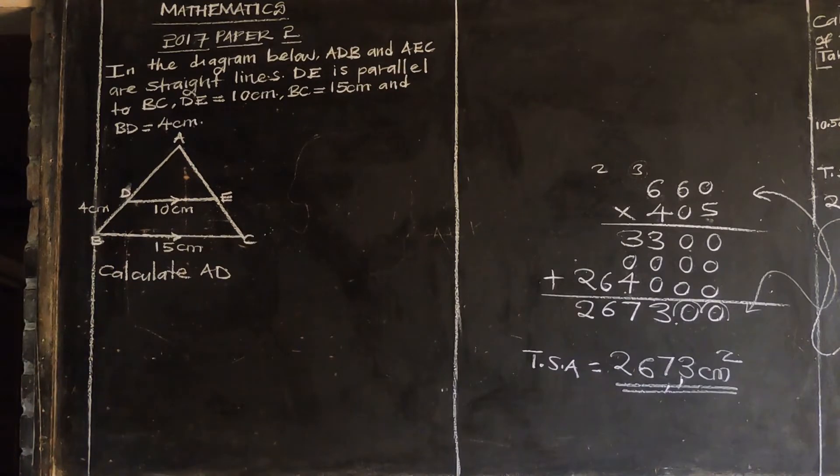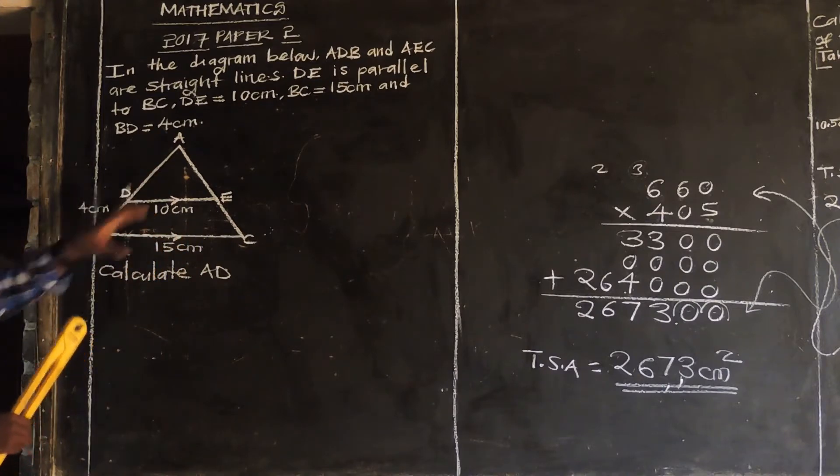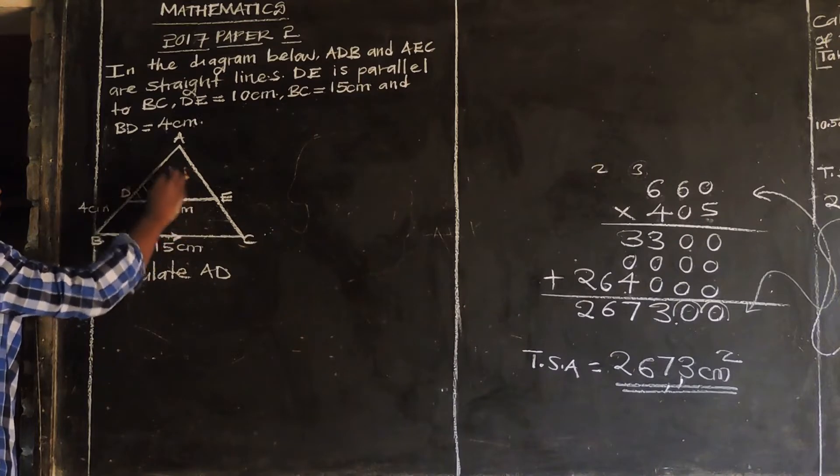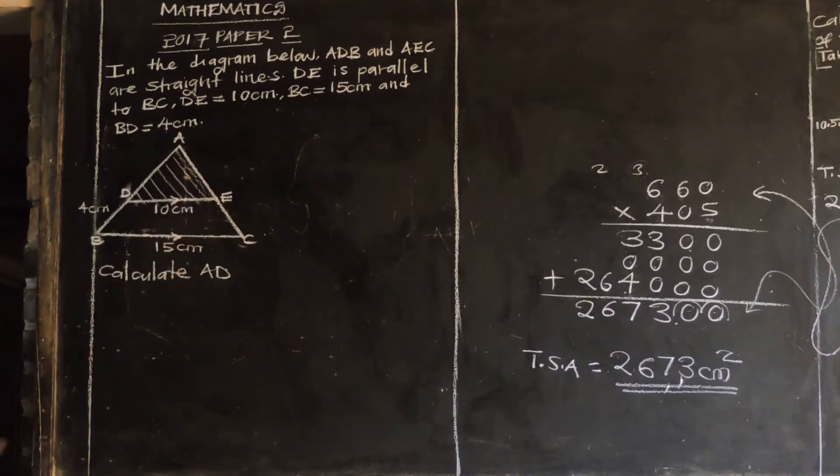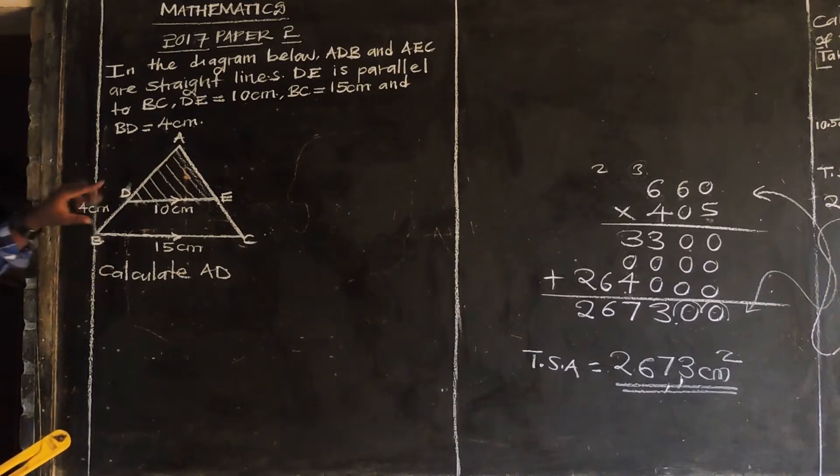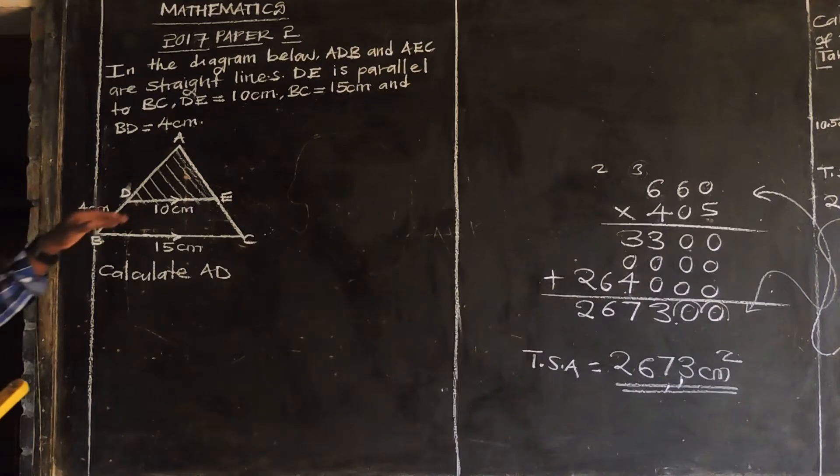So what we are going to do is, in this case, we realize that we have got a big triangle, then inside this big triangle we have got a small one. Inside the big triangle, we have got a small triangle. So what can help you answer this question is, we need to separate the two triangles.